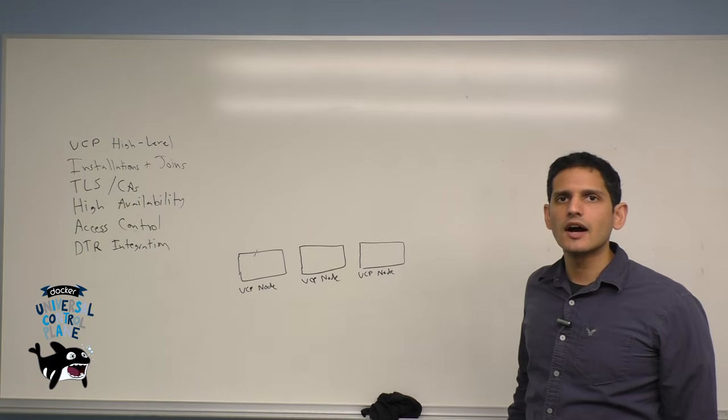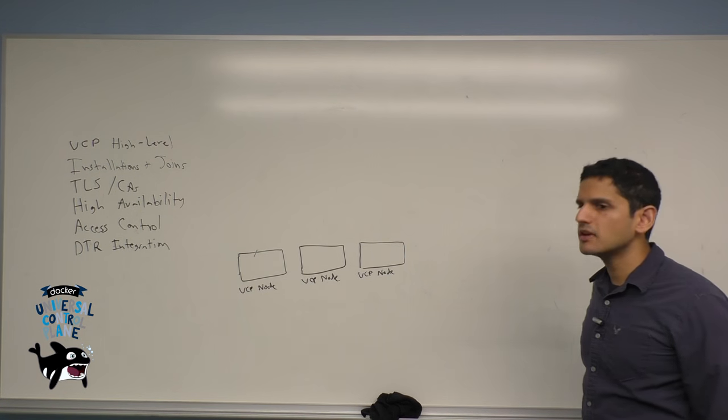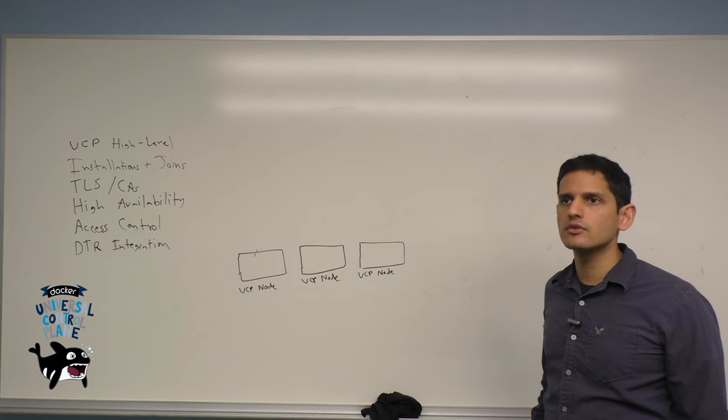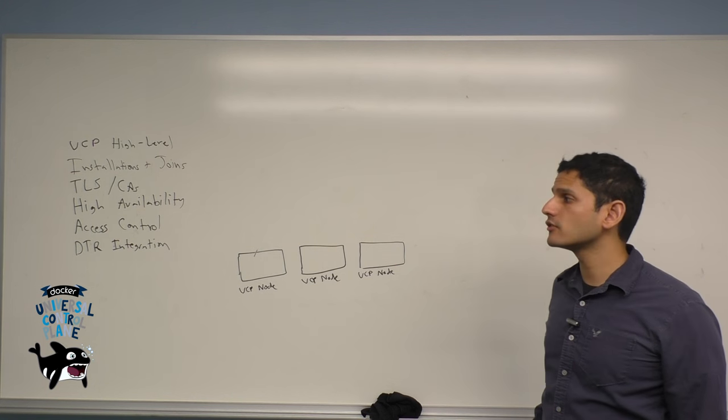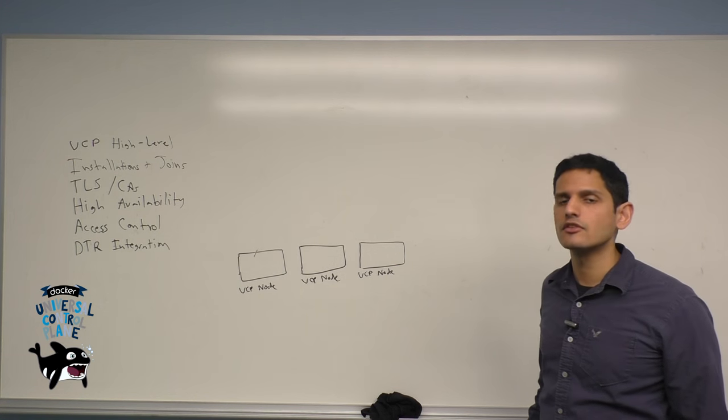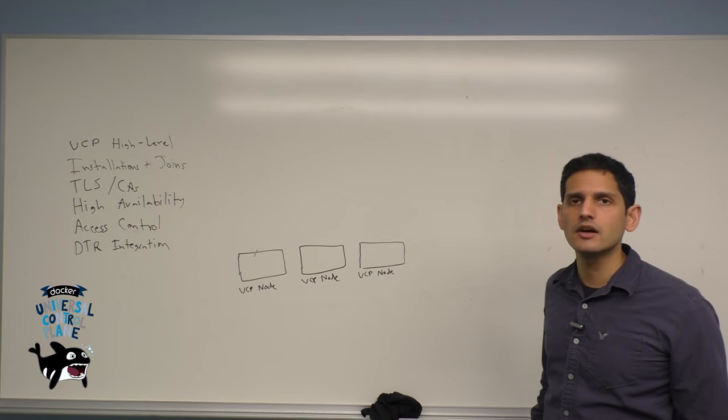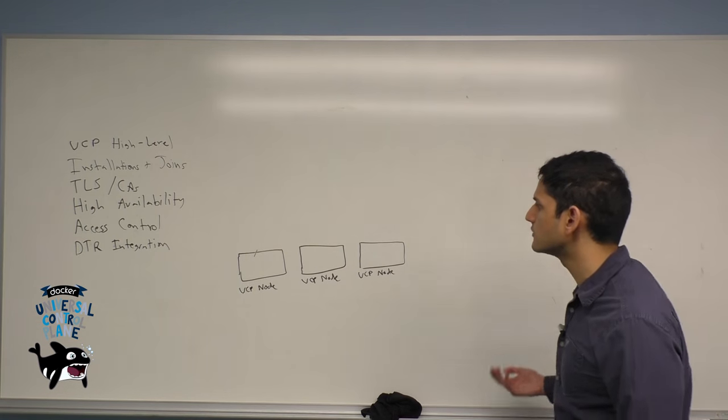So now we'll talk a bit about the high-level architecture of Universal Control Plane. UCP is a management and orchestration solution that allows you to schedule groups of containers across a series of nodes. These nodes can be either physical nodes, like servers, or they can be virtual machines running on-premises or in a public cloud of your choice. In this example, we'll have three UCP nodes.